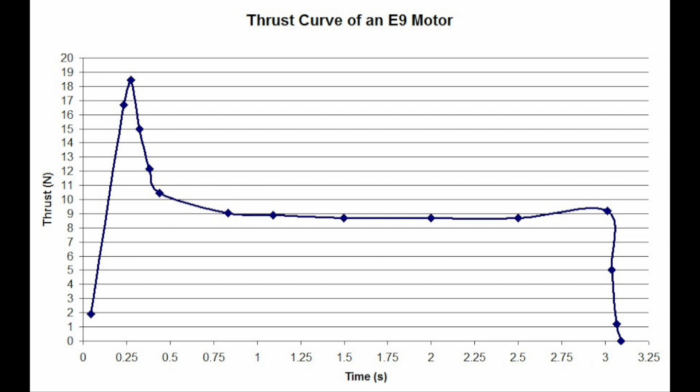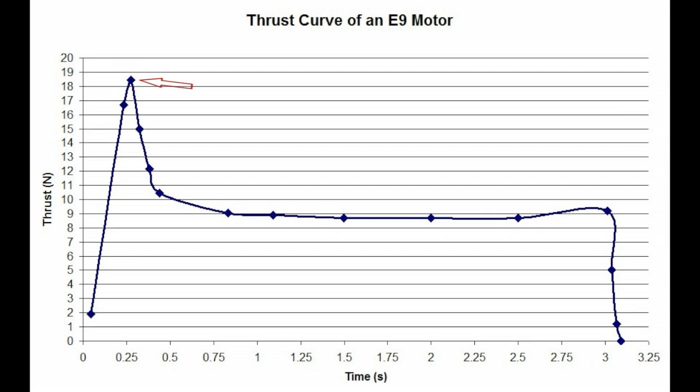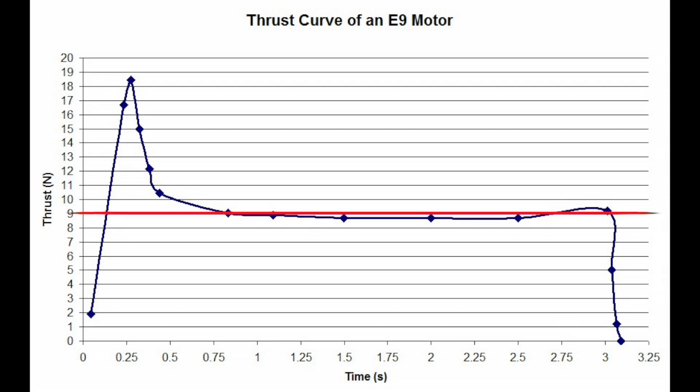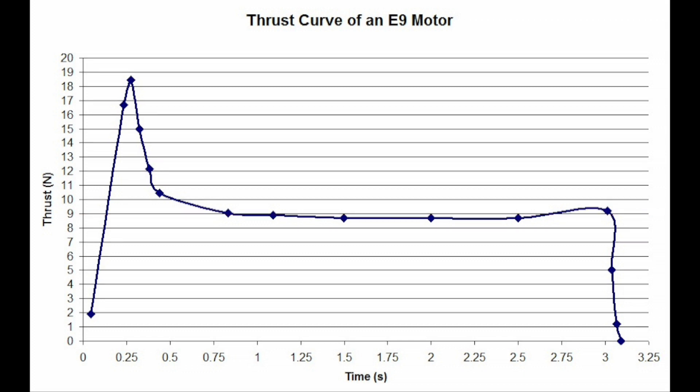Our graph shows the thrust curve for the E96 motor. As we can see, the motor reaches its peak thrust just after the 0.25 second mark and burns until the 3.1 second mark. If we were to take an average on this graph, we would get 9 newtons, the number designated in the motor code.